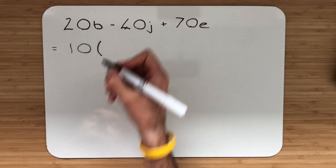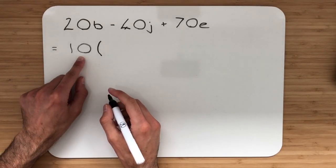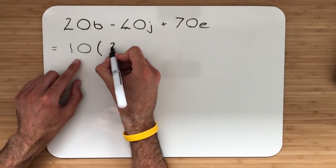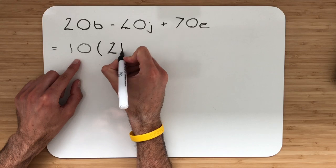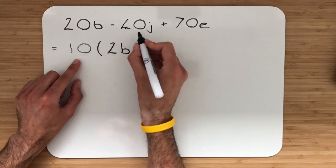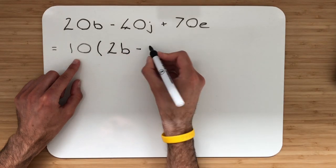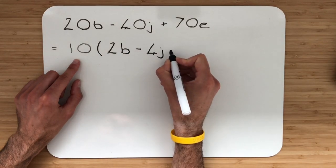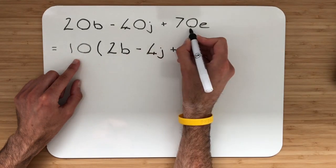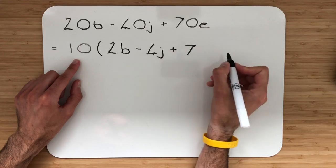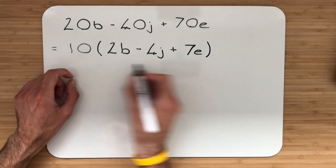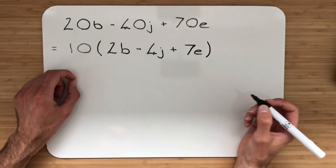Bring back your bracket. Now let's go through the process. 10 multiplied by what gives me 20b? Deal with the number first. So it'll be 2. Then we need the letter b. Then put our subtract. 10 multiplied by what gives 40? That's 4. Then we've got our letter j. Put your add. 10 multiplied by what gives 70? That's 7. Then we need the letter e. Breaking that back out, you'll see you get the expression that you started with.